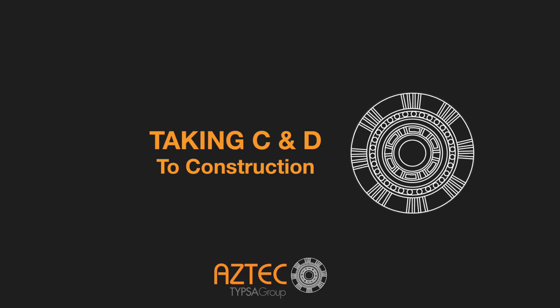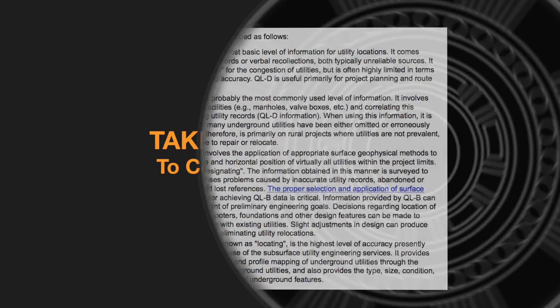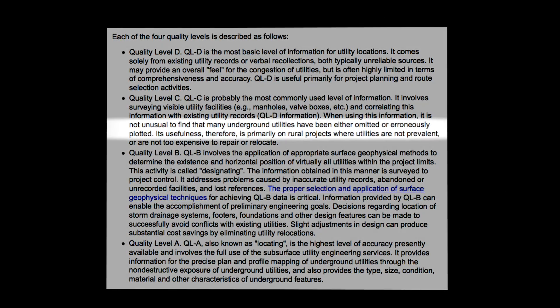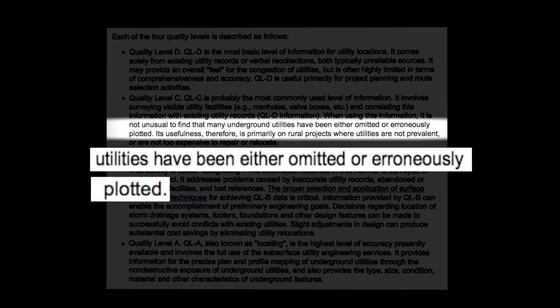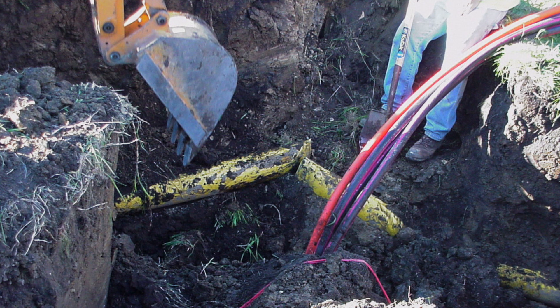Due to their unreliability, levels D and C alone are no longer widely accepted. The FHWA reports historically a 15 to 30% error or omission rate with level D and C alone.